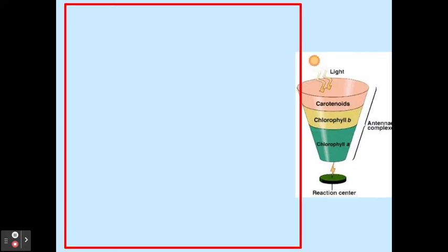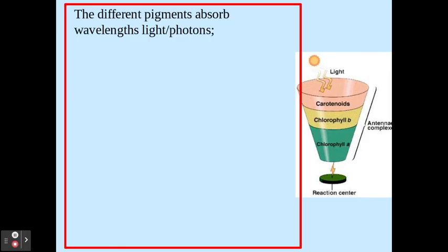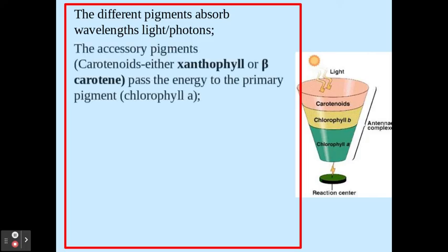The way that these work is that these different pigments absorb different wavelengths or photons of light. It's really important that you don't just say they absorb light — you have to say different wavelengths or photons of light. These accessory pigments — carotenoids such as xanthrophyll or beta-carotene, or chlorophyll B — pass on energy into the primary pigment at the bottom, chlorophyll A.